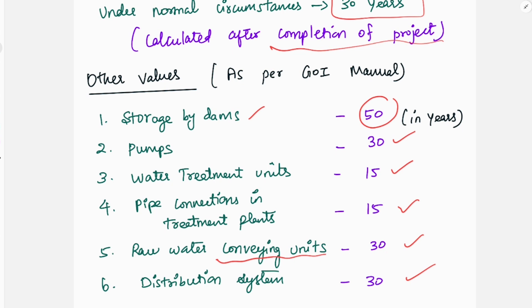This is the government of India manuals. The design period. But, for this reason, if we look at general, if we look at this project, then we have to fix a water supply scheme for 30 years. In normal circumstances, we have to fix the design period. Thank you.